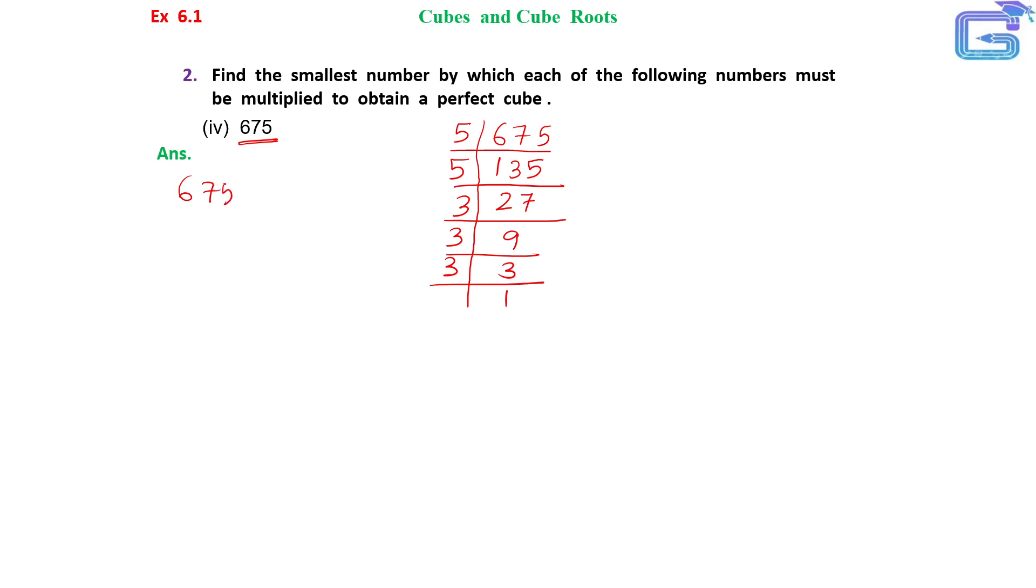We can write down the factors of 675 as 5 × 5 × 3 × 3 × 3. We can write it like this: 5² × 3³. So here we find that 3 is forming a cube, but 5 is not forming a cube.